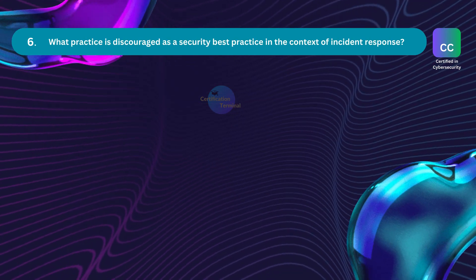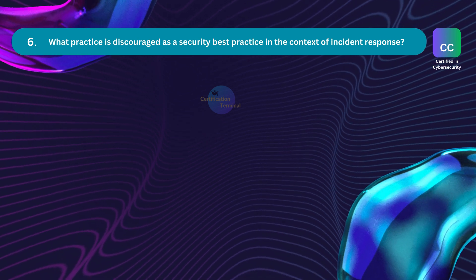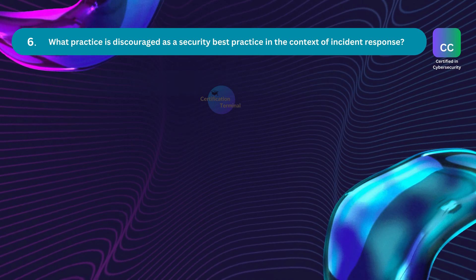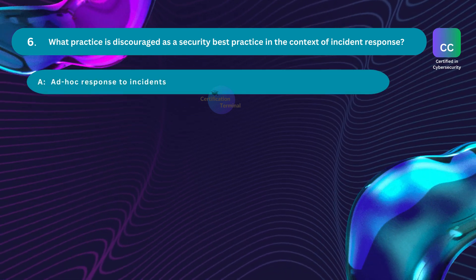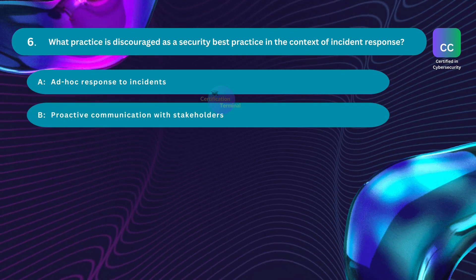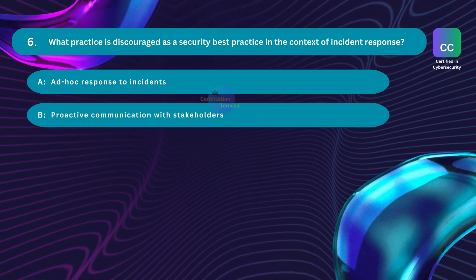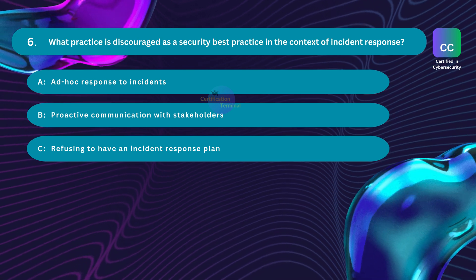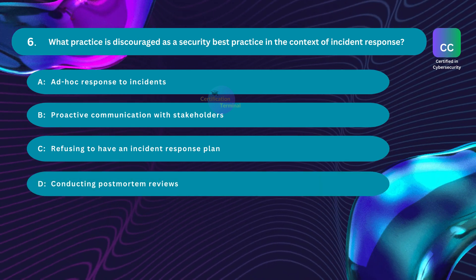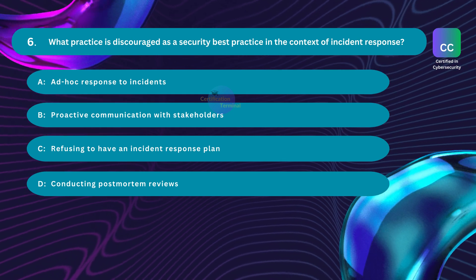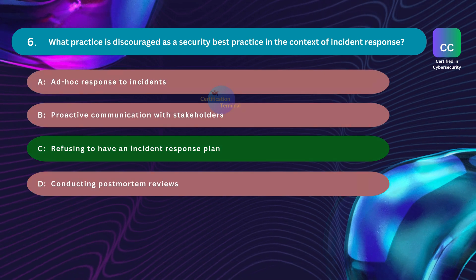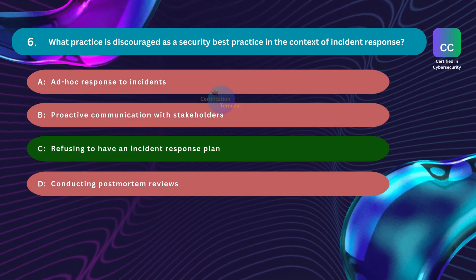Question number six: What practice is discouraged as a security best practice in the context of incident response? Option A: ad-hoc response to incidents. Option B: proactive communication with stakeholders. Option C: refusing to have an incident response plan. Option D: conducting post-mortem reviews. The correct answer is Option C: refusing to have an incident response plan.